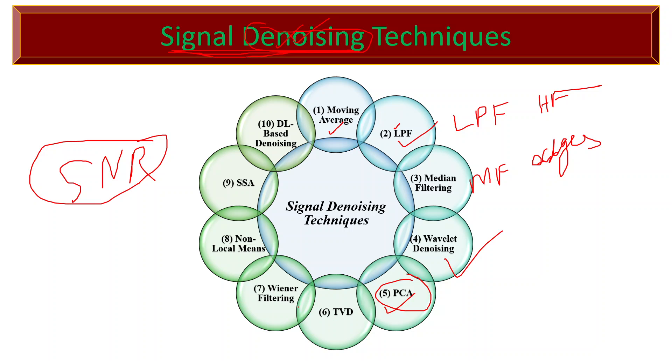Total Variation Denoising, or TVD, is based on minimizing the total variation of the signal while preserving important edges. It is particularly effective in removing salt and pepper type noise.